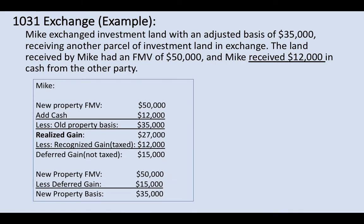So what is Mike going to receive? Mike will receive $50,000 — the fair market value of the new property — and also $12,000 cash from the other party. So Mike's total value received is $50,000 plus $12,000, which equals $62,000. His adjusted basis is $35,000. So $62,000 minus $35,000 gives a realized gain of $27,000.